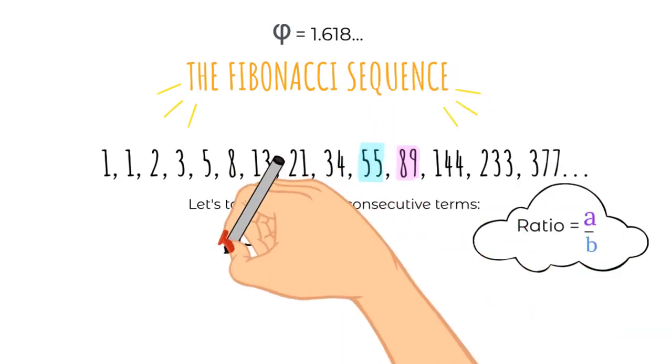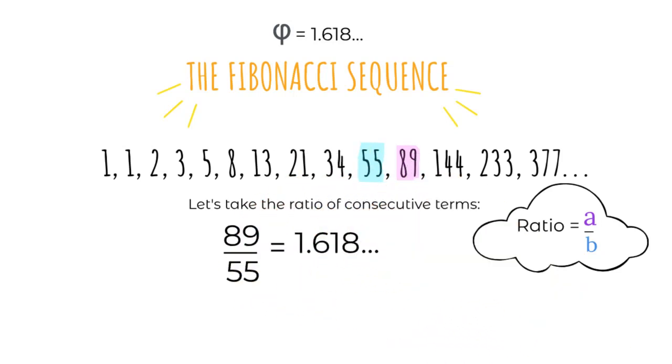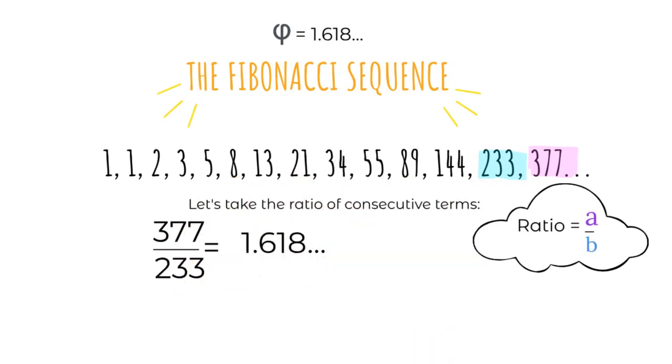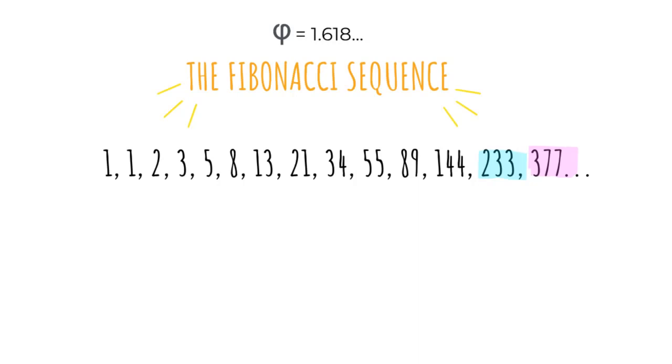Let's try it with another two numbers, 89 and 55. Oh, the golden ratio. Let's try another two numbers. Oh, and again, the golden ratio. It will actually get more and more accurate to more decimal places the higher up we go.